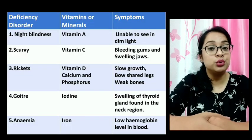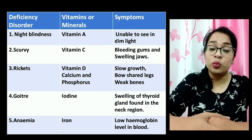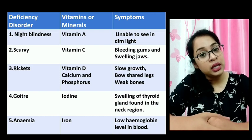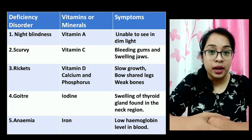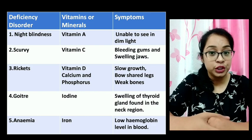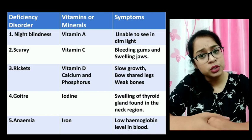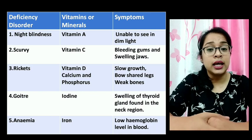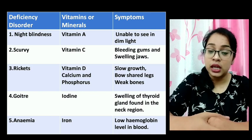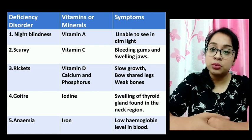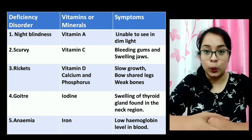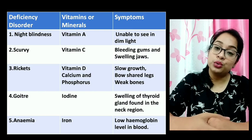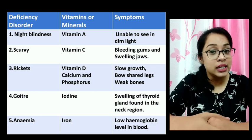The first disease is night blindness. Night blindness is caused due to deficiency of Vitamin A. You can get Vitamin A from carrots, papaya, milk, butter, and fish. The symptom is that the person is unable to see in dim light. Next is scurvy, which is caused due to the lack of Vitamin C in the diet. You can get Vitamin C from all citrus fruits such as lemons and oranges.